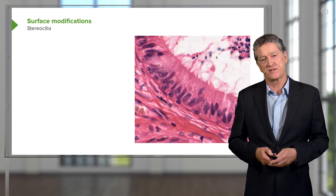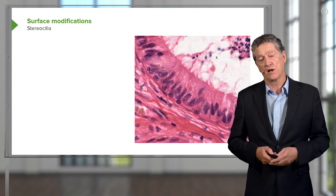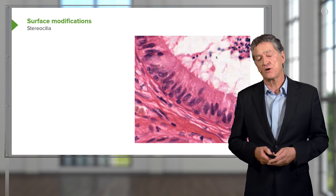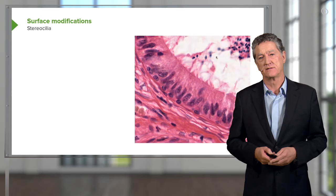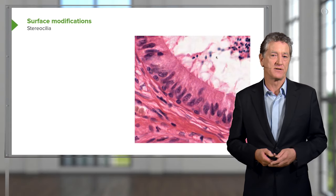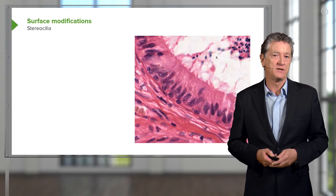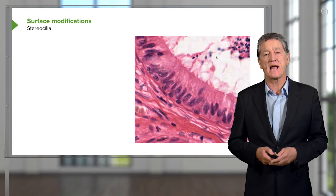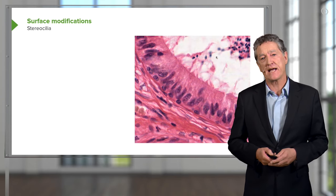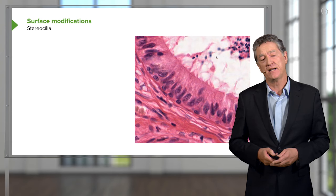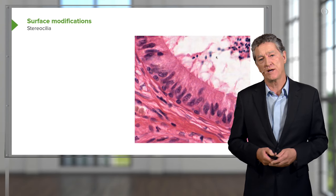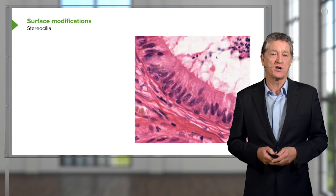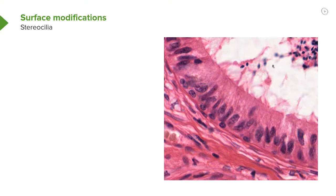Stereocilia are very similar to microvilli. They're longer because the actin filaments are longer, and they branch as well. They also use different anchoring proteins to hold the actin filaments together into the terminal web and to the cell membranes. Essentially they are similar structures, specialised for absorption of fluid.